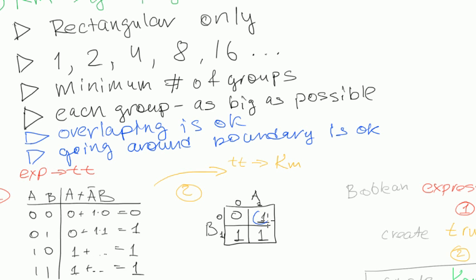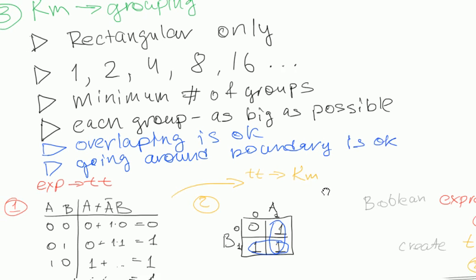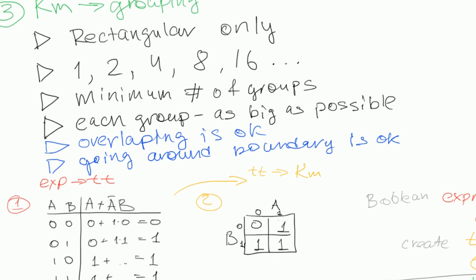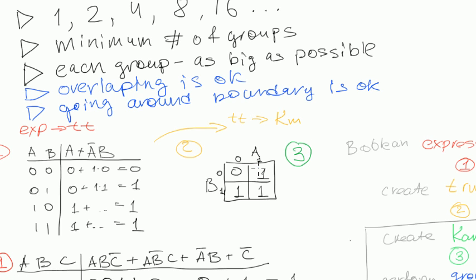So you can have one group here and one group here, satisfying the minimum number of groups requirement. But checking the next rule — each group should be as big as possible — one of the groups could be made bigger using overlapping, and we know overlapping is allowed. So the correct grouping solution for this small Karnaugh map uses overlapping to maximize group size. That was Step 3 — grouping — and we grouped this small Karnaugh map. Step 4 will be getting an expression out of these groups.